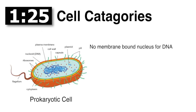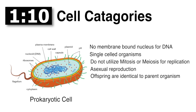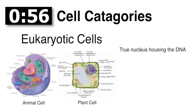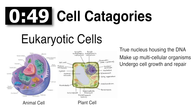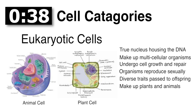There are two major categories of cells. The first is prokaryotes. They have no membrane-bound nucleus to hold together their DNA, they are single-cell organisms, and they do not utilize mitosis or meiosis for replication. Rather, they utilize asexual reproduction by making exact copies of themselves. Examples of prokaryotes are bacteria — they are pretty simple cells and, according to the theory, give rise to more complex cells. Eukaryotes are the second and most complex category. They have a true nucleus containing their DNA, they are multi-celled, they undergo cell growth and repair, and organisms reproduce through sexual reproduction, providing for diverse traits within their offspring. Eukaryote cells are the living structures that make up the plants and animals in our world today.